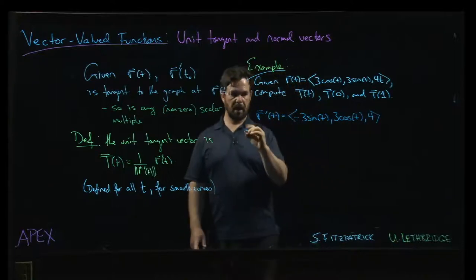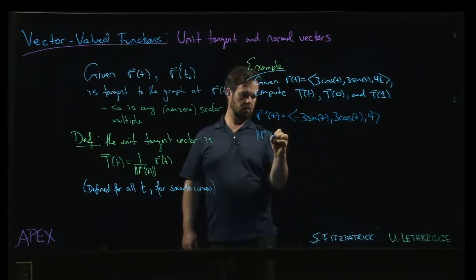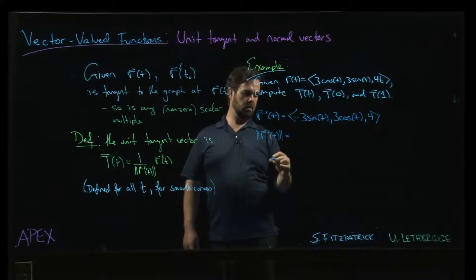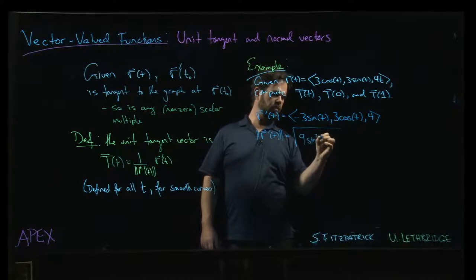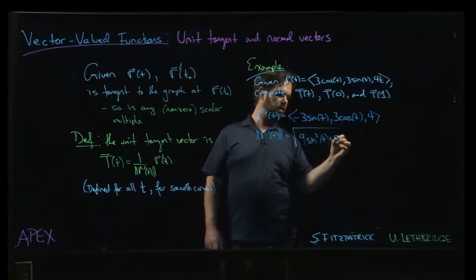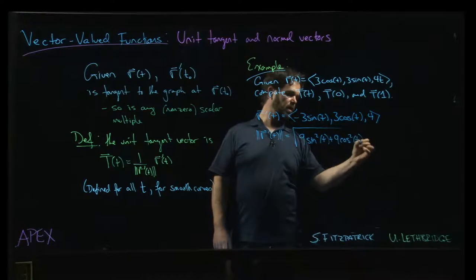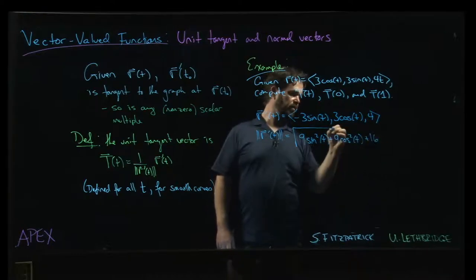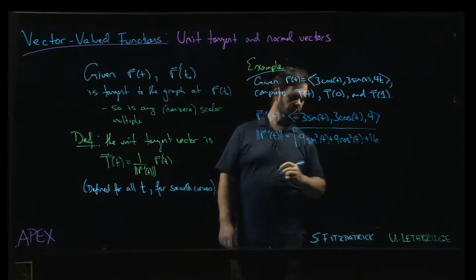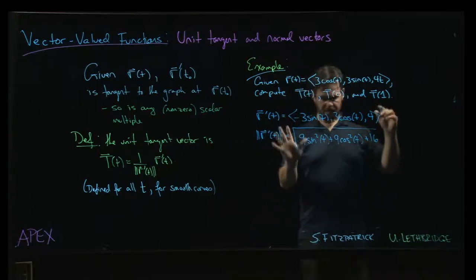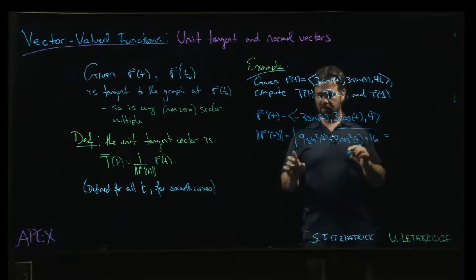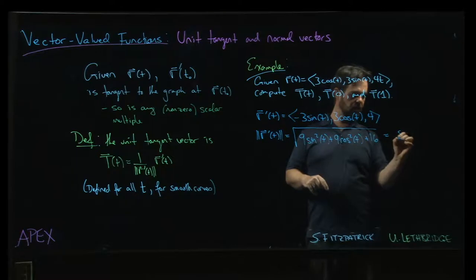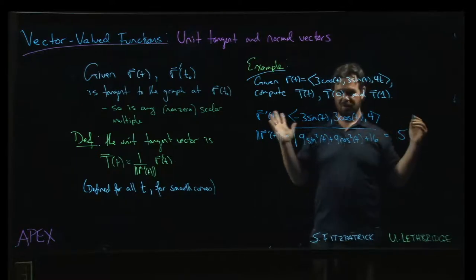The magnitude is going to be the square root of 9 sin squared t plus 9 cos squared t plus 16. And maybe you're getting the feeling that this problem was a bit of a setup. The magnitude comes out to be nicer than we reasonably should expect it to be. That's going to combine to give me just 9 plus 16 is 25. Square root of 25, good old 5.